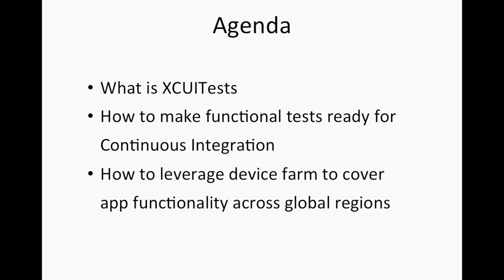So what's the agenda for today's webinar? We're going to talk about XCUITest in context — what it is and why we need to use it. The most important topic is how to make functional tests ready for continuous integration. In today's world, your tests are not going to run on your Xcode environment; they're most likely going to run remotely on integrated systems such as Jenkins, CircleCI, or Travis CI. We'll also cover globalization and internationalization — how to roll products globally — and how continuous testing in the continuous delivery pipeline can be leveraged using device farms.